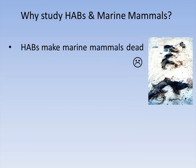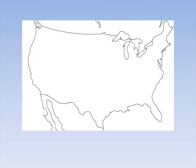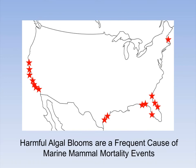The main reason we study HABs in the context of marine mammals is that, like the 1998 event, they're a major source of marine mammal mortality. After that event we started noticing similar events with similar toxins and similar species popping up across the country. Whenever we had large-scale harmful algal blooms, we tended to have large-scale wildlife mortality events — and a lot of those wildlife were marine mammals.